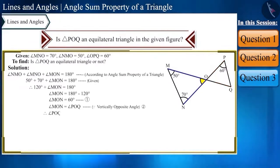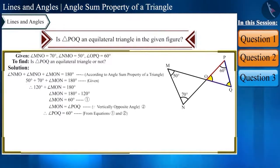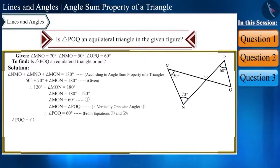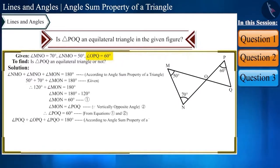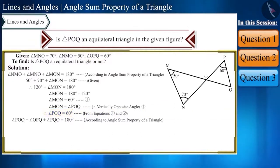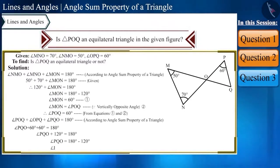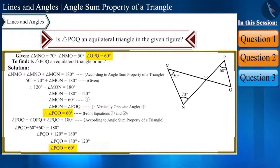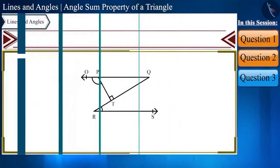Since angle POQ, angle OPQ, and angle PQO are angles of the same triangle, angle POQ plus angle OPQ plus angle PQO equals 180 degrees. We are given angle OPQ and have found angle POQ, so putting both values in gives angle PQO equals 60 degrees. All angles of triangle POQ are 60 degrees, so this triangle is an equilateral triangle.